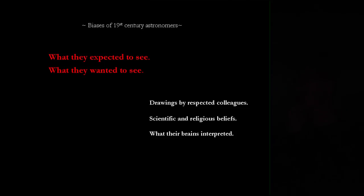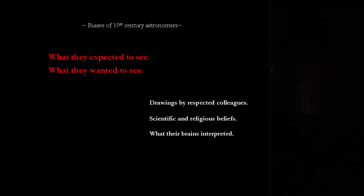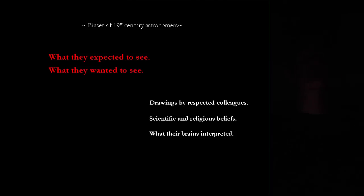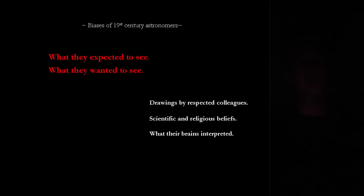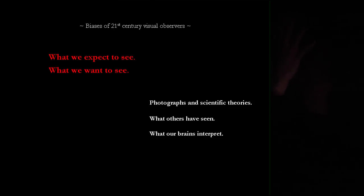In the 19th century, astronomers had biases — what they expected to see and what they wanted to see — greatly influenced by drawings of their respected colleagues. The drawings of the Herschels and Lord Ross were taken as the standard for whatever particular object they depicted. Scientific and religious beliefs played a huge role in the biases of 19th century astronomers, quite different from what we have today. What we expect to see and what we want to see hasn't changed, but the influences have.